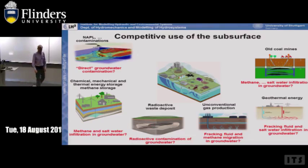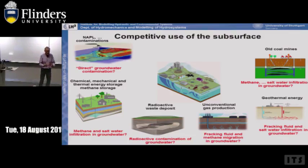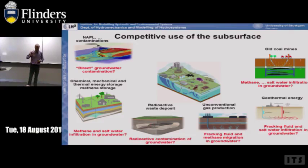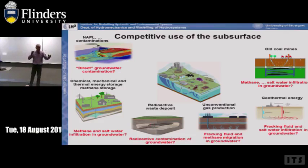Another risk is geothermal energy — we have a lot of trouble with it in Germany and Switzerland because of micro-earthquakes from fracking to increase heat exchange surface area. In one case in Stauffen, a well was drilled across a swelling clay formation, doing a lousy job. Now the city has cracks in the houses and the state government has decided to close the city center — a city 1,800 years old. That's really a shame.